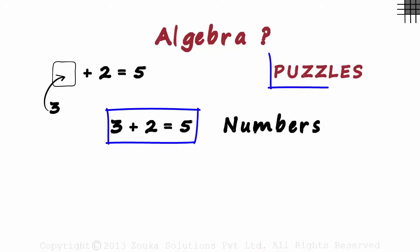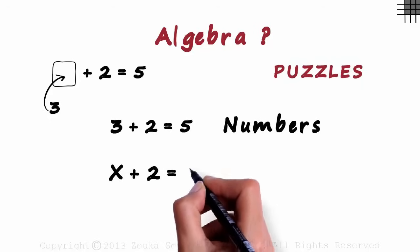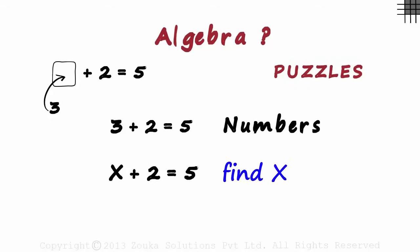This puzzle can also be asked in a different way. We can say that x plus 2 equals 5. Find x. We just used a letter in place of the box. These letters are also called variables.